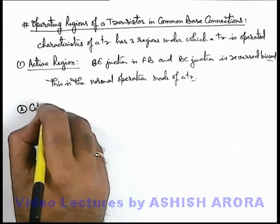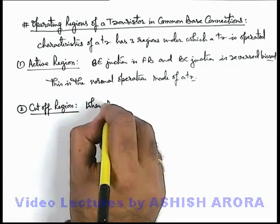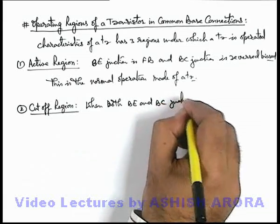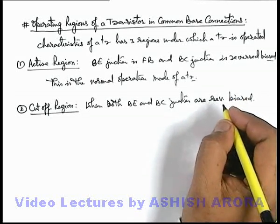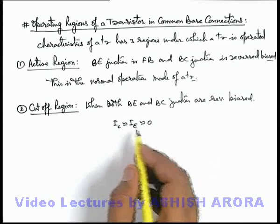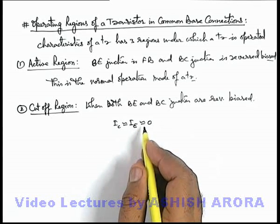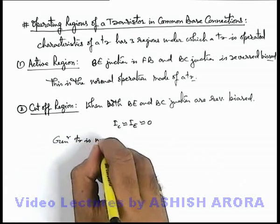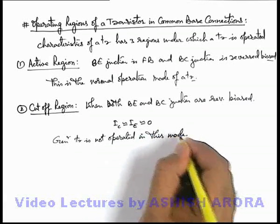The second one is the cut-off region. This is a situation when both the base-emitter and base-collector junctions are reverse biased. When both of these junctions are reverse biased, IC is approximately equal to IE, which is also approximately equal to zero, or a very small current flows which is due to minority charge carriers. That's why it is approximately equal to zero, not exactly zero. In this situation, generally the transistor is not operated in this mode because it is of no use as no current is flowing.